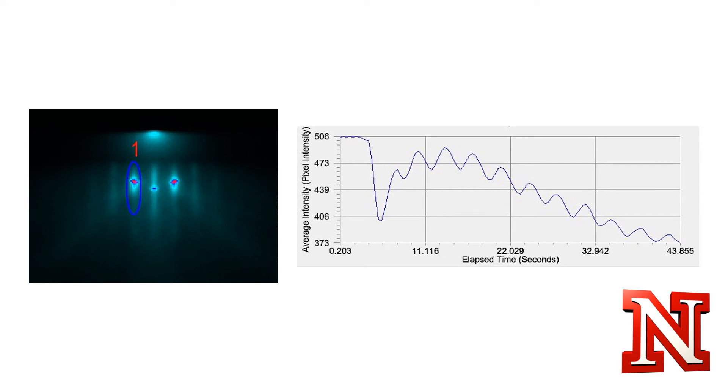We mainly use RHEED because of the intensity oscillations. High-intensity to low-intensity and back to high. This tells us when we have a high-intensity, we have a smooth surface, whereas if we have a low-intensity, we have a rough surface, as the atoms are being deposited on the surface.